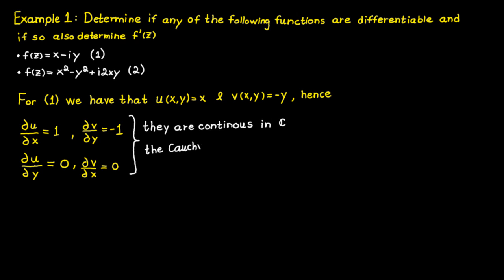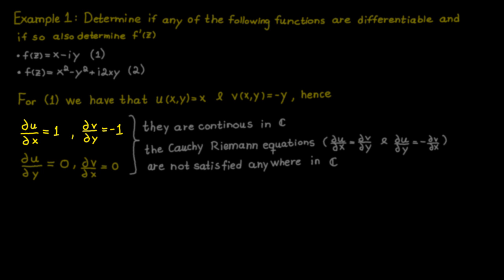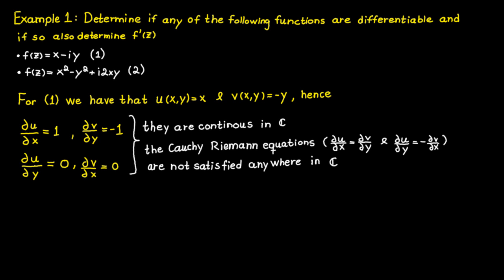But we can also see that the Cauchy-Riemann equations are not satisfied anywhere in the complex plane, since the partial derivative of u with respect to x cannot be equal to the partial derivative of v with respect to y anywhere. Therefore the function cannot be differentiable in any region in the complex plane.